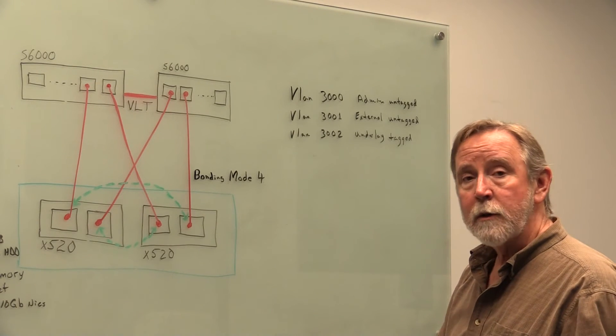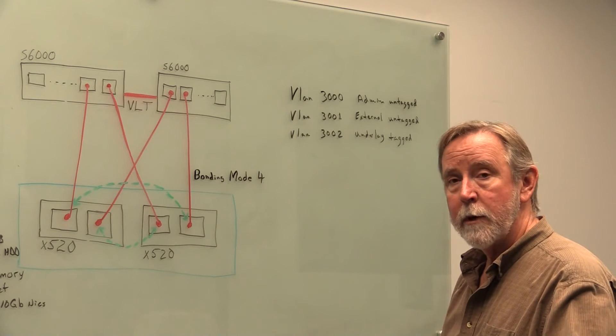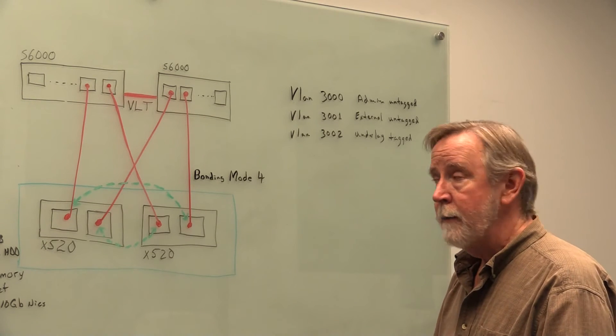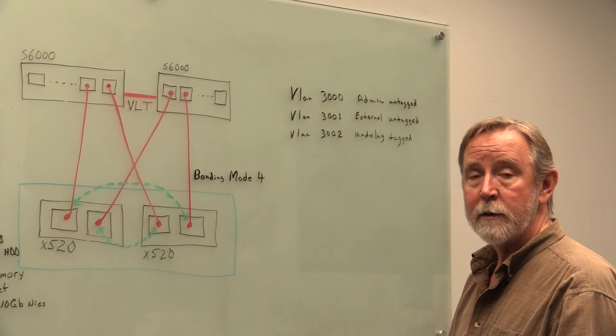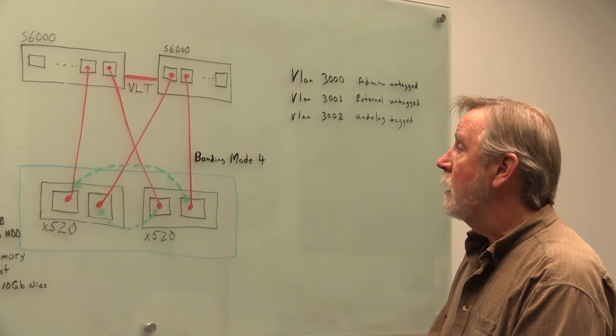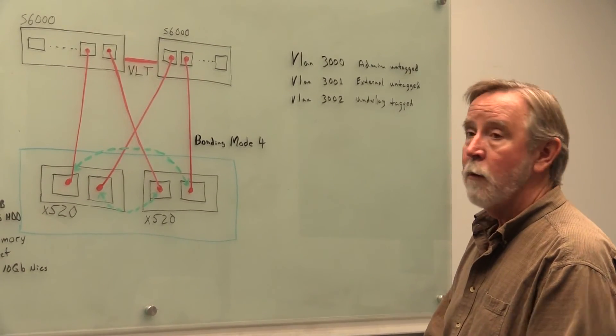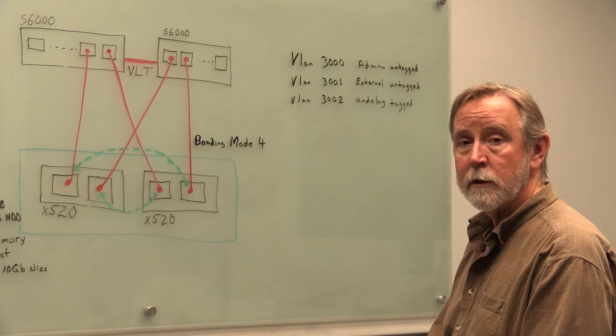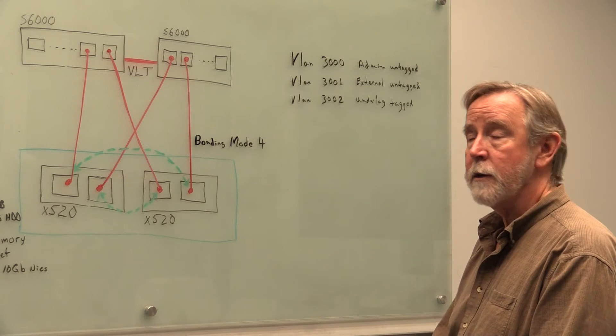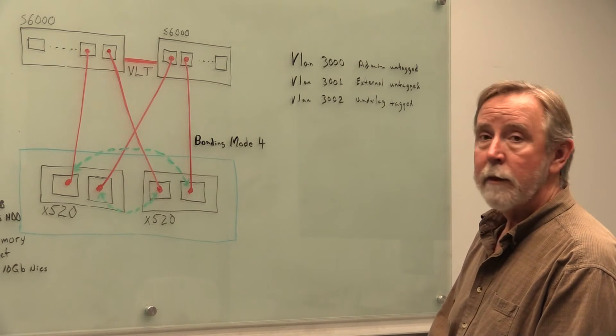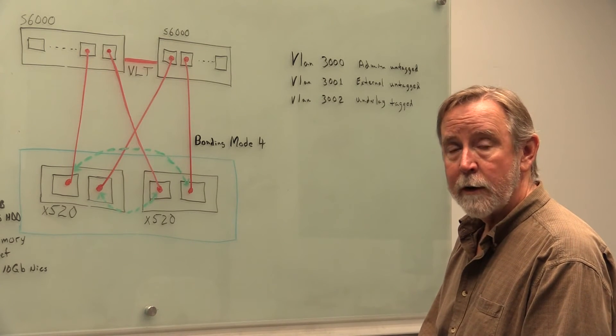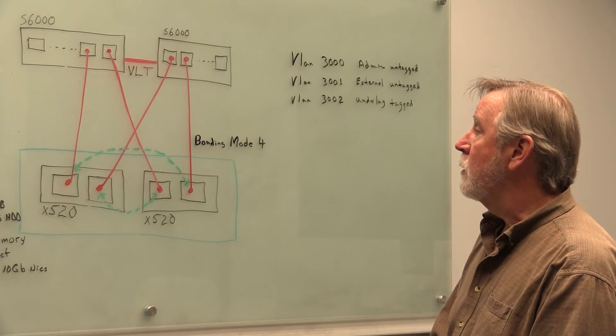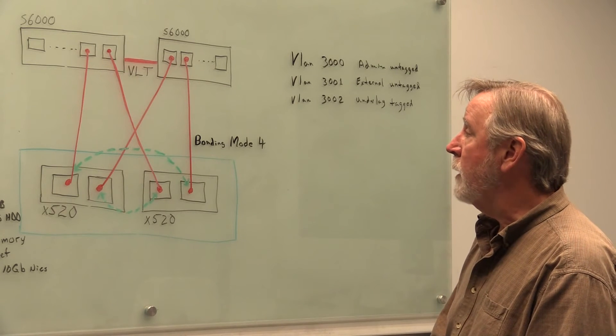So once you start the installation process, you boot it off the USB key, it's all scripted, and it's very, very simple, it is just dead easy. The first thing you install is a head node, and what's installed on the head node is, of course, it lays down SmartOS first, which has an open Solaris heritage, and the services, the Triton services that will run.